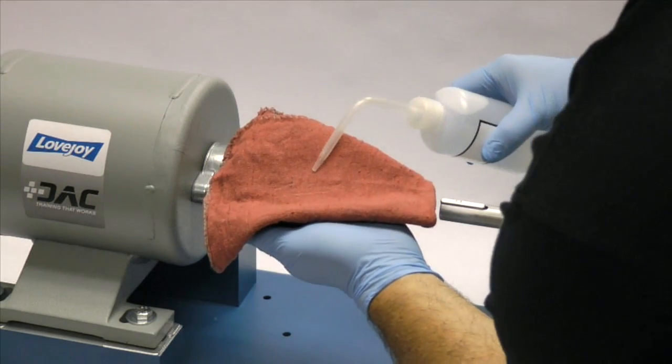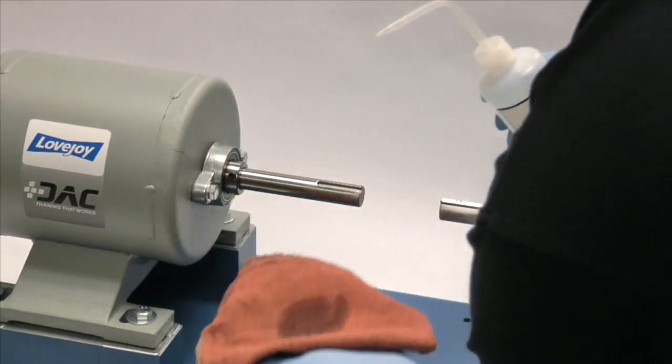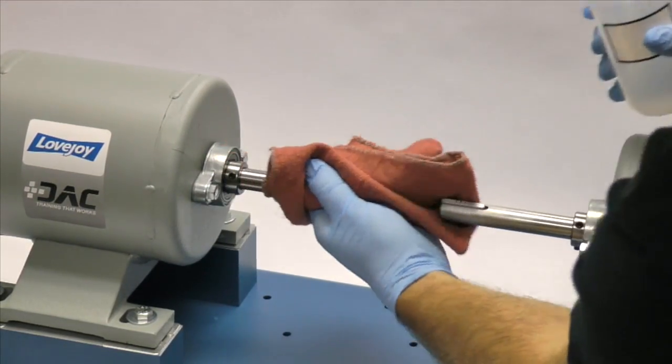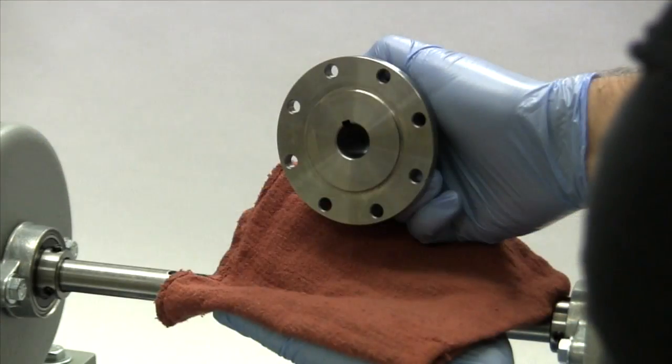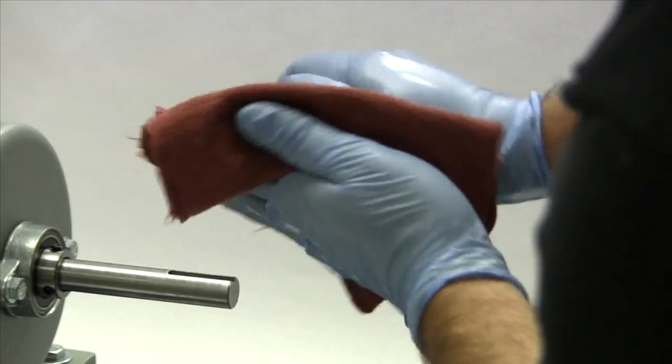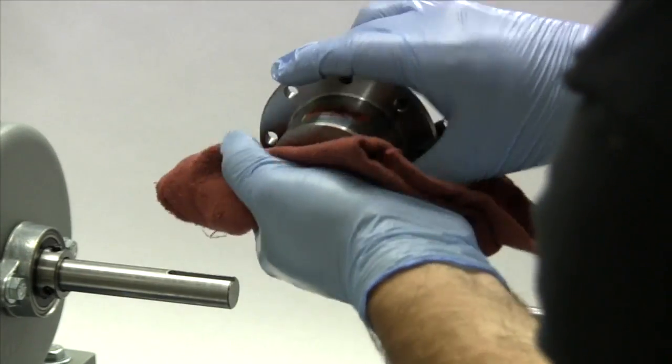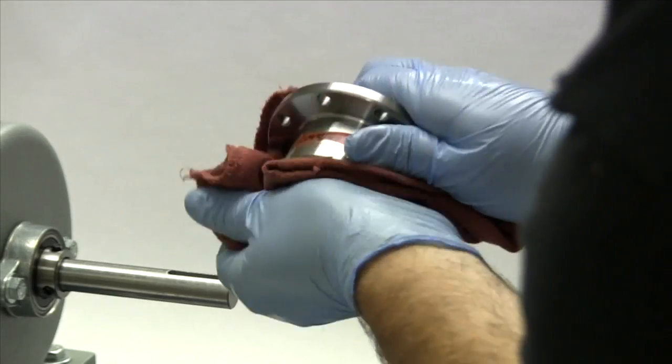Finally, using our cloth and cleaning solvent, we need to ensure the surface of the shaft and the keyway are clean and free of dirt. The hubs, the grid spring, and the cover accessories should also be cleaned to remove any coatings used to protect them during shipping.